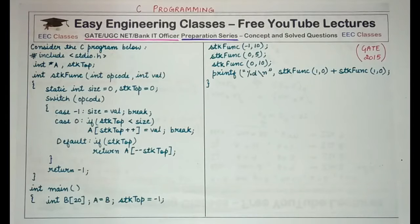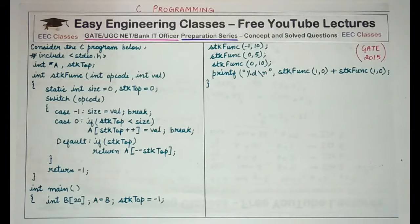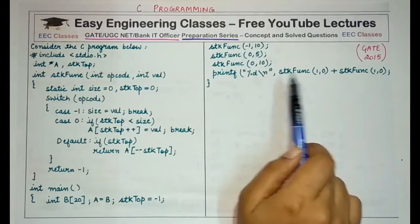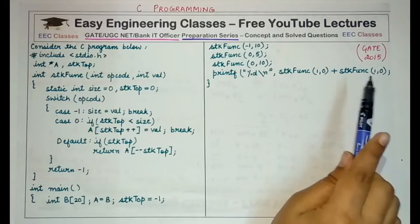There is a switch on opcode with three cases. Case -1 assigns size = val and breaks. Case 0 checks if stack_top is less than size; if true, assigns a[stack_top++] = val and breaks. The default case checks if stack_top is non-zero and returns a[--stack_top]. The function ends with return -1. The main function declares int b[20], calls stk function three times, and ends with a printf of stk_func(1,0) + stk_func(1,0).